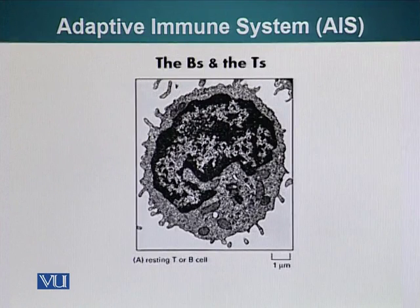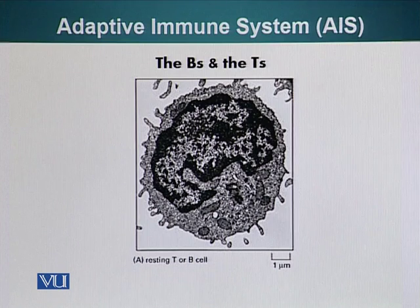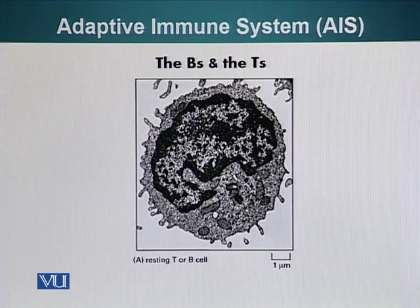The B cells and T cells look very similar. Even under an electron microscope, it is hard to determine whether a cell which has not fully developed yet — a precursor cell — whether it is going to form a B cell or a T cell. Here on the screen you can see an electron micrograph of a cell which could either develop into a B cell or a T cell.